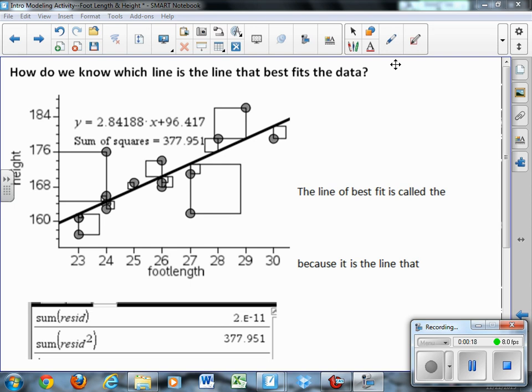We do a process called least squares regression. And what this means is that you start by finding the residuals of all of the different points. So we start by looking at residuals.